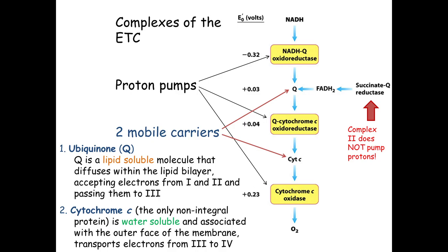All electrons ultimately end up at Q. Q transfers them to Complex III, the quinol:cytochrome C oxidoreductase. Complex III gives electrons to cytochrome C. The last complex, Complex IV, is called cytochrome C oxidase — it gets electrons from cytochrome C and gives them to O2. They got a bit lazy with the name since it's the end of the line, but it reduces O2 to water. Complex IV also pumps protons.